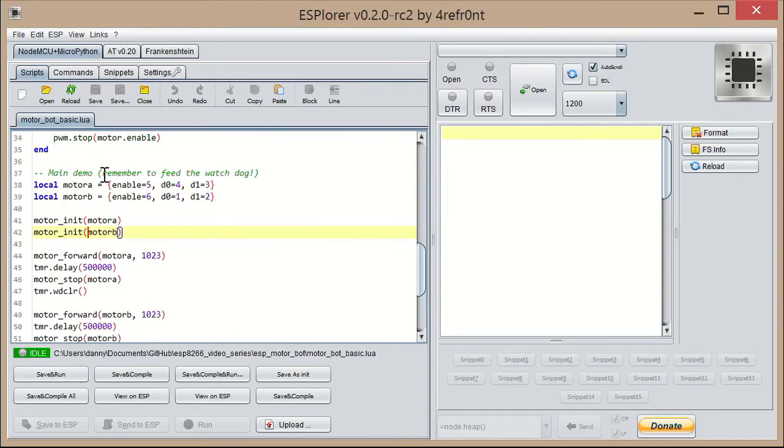In the main code, we initialize both motors. Notice here, I've said, remember to feed the watchdog. So on the ESP, if you go into a loop and you don't feed the watchdog, it will reset. It's trying to prevent you from accidentally creating a tight loop where you can never reprogram it again, or where it's not responding. You're feeding the watchdog to tell it your code is not hung so it doesn't automatically reset.